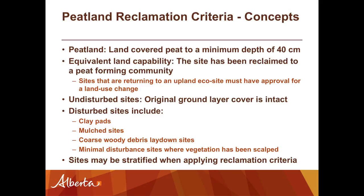You're going to see two kinds of sites in the criteria. An undisturbed site means the ground layer is intact — there may have been some brushing, but the ground layer has not been changed. Those would typically be frozen-in sites with winter access and winter operations. Disturbed sites are those where the ground layer has been disturbed or removed — padded sites, mulch sites, or places where coarse woody debris was laid down, or sites intended to be undisturbed where the ground layer got disturbed too much.